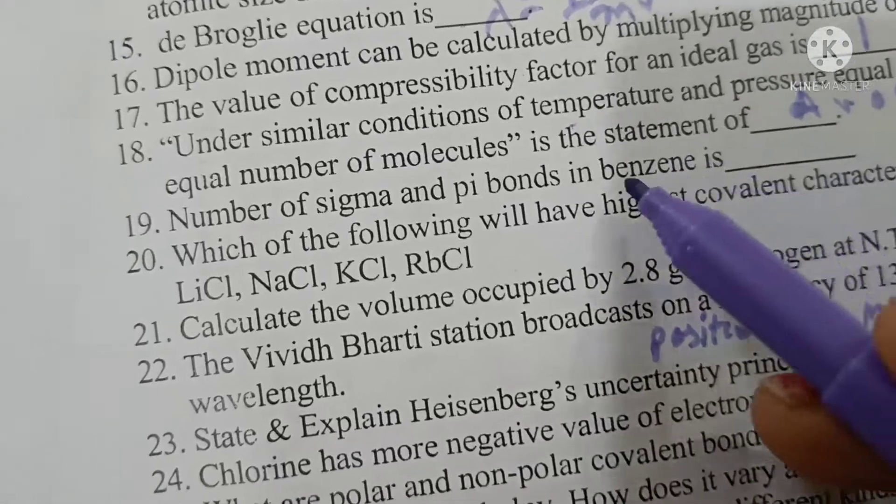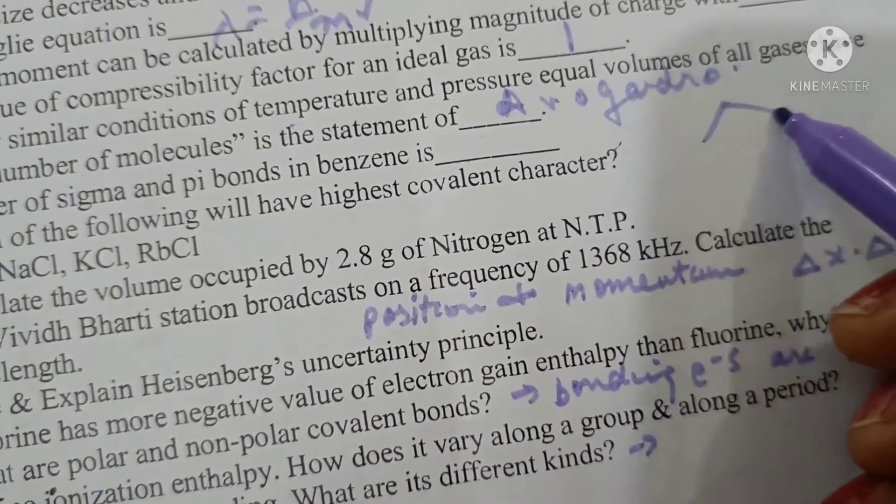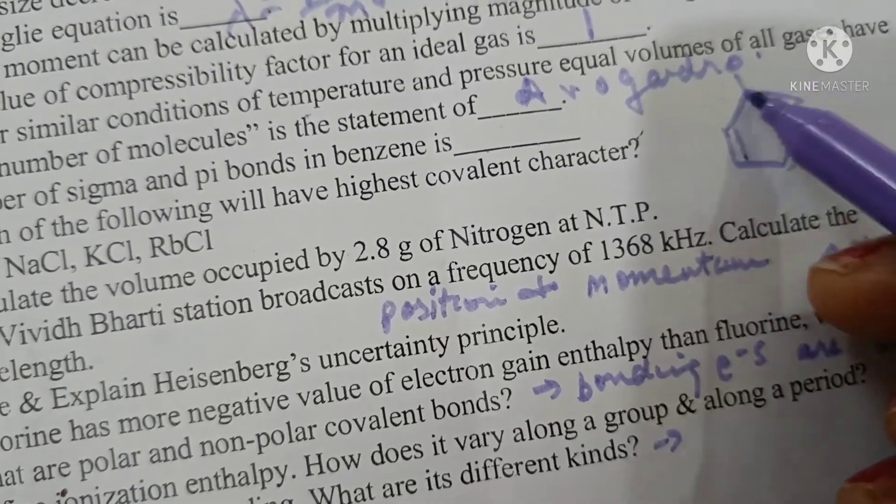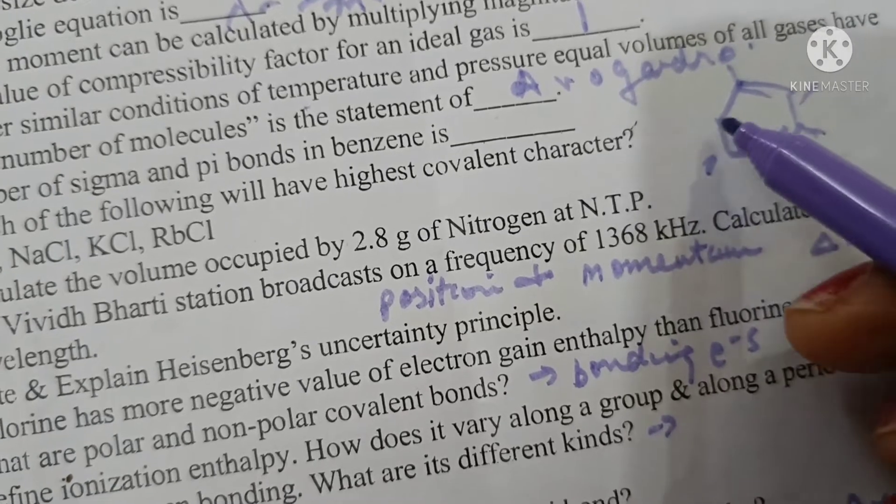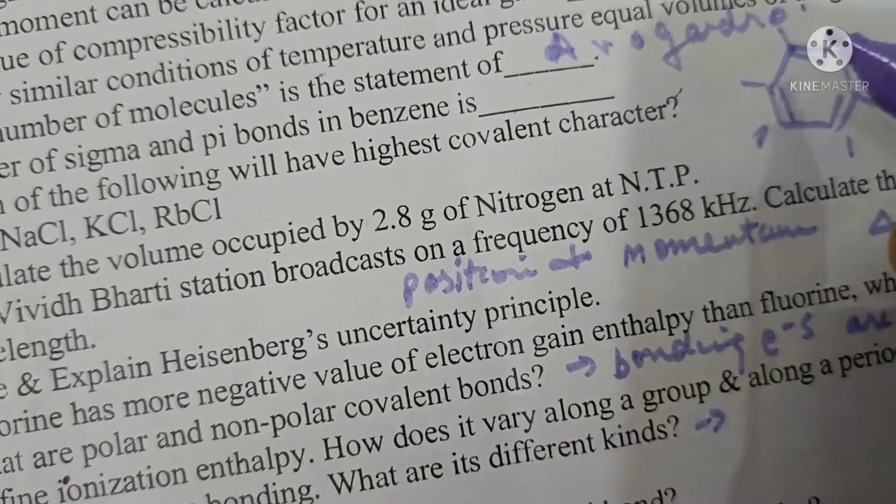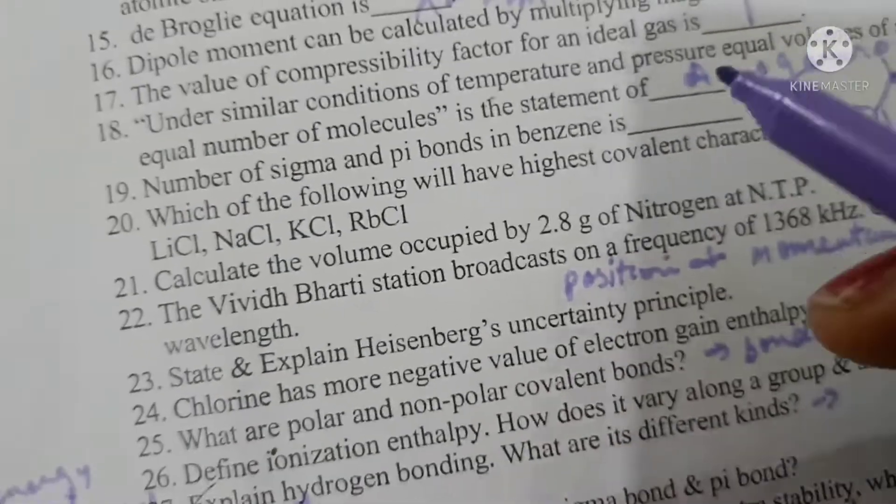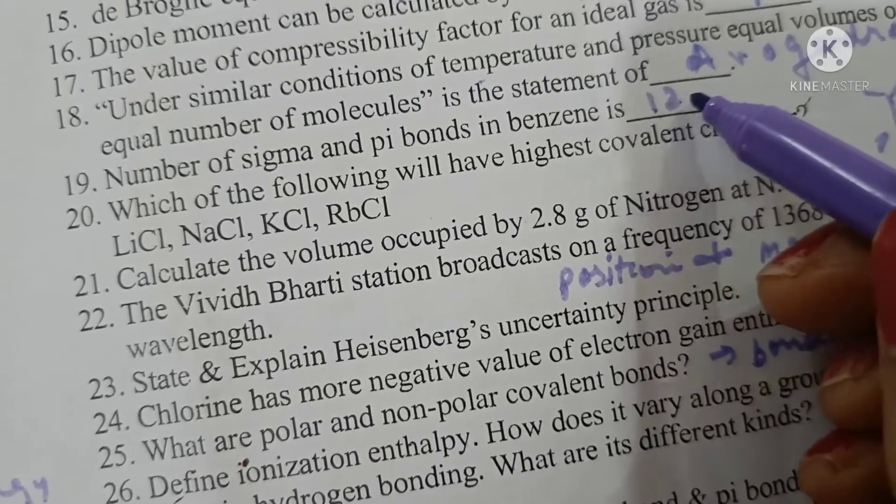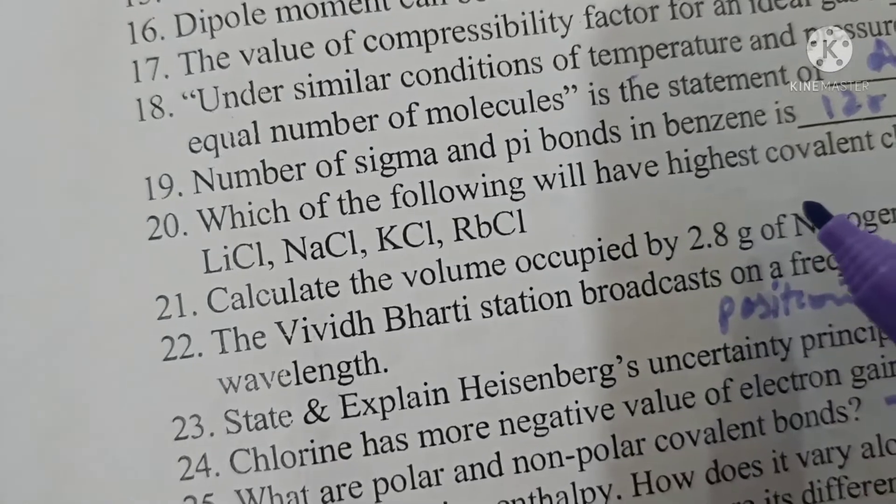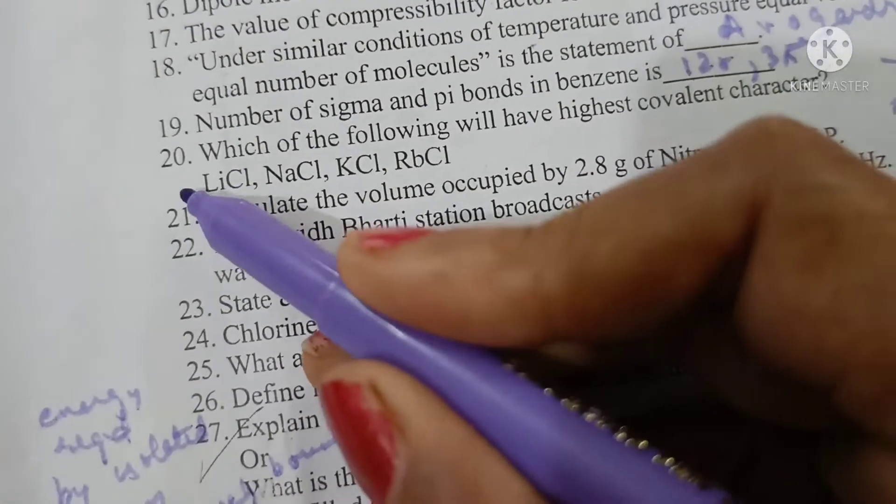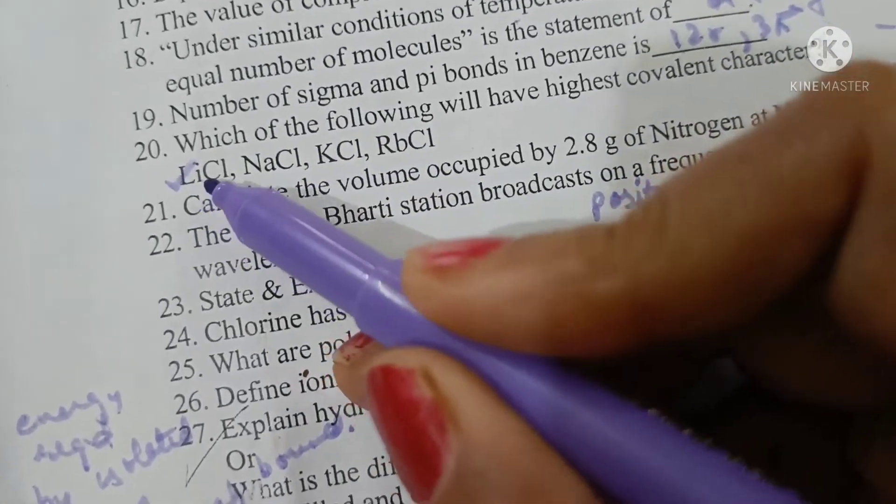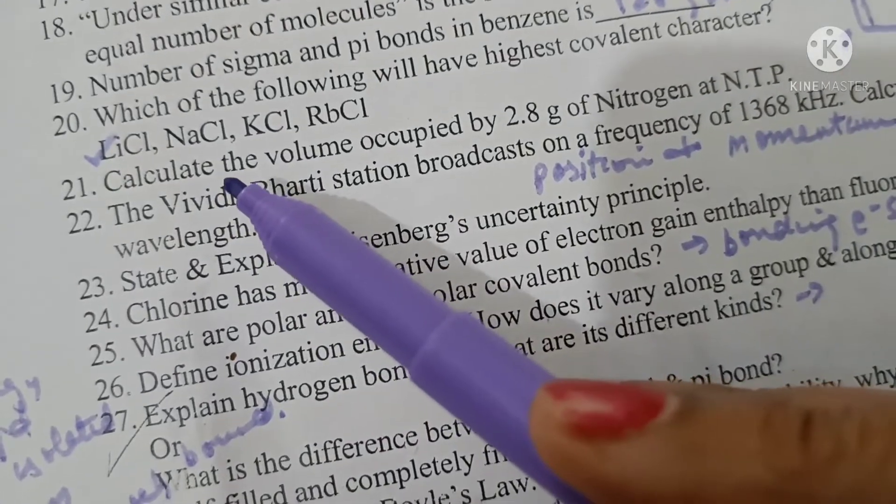The number of sigma and pi bonds in benzene - benzene has 3 pi bonds and as it has 6 carbon hydrogen bonds and 6 carbon-carbon single bonds, it has in all 12 sigma bonds. So 12 sigma bonds and 3 pi bonds. Which of the following will have highest covalent character? As smallest ion is lithium, lithium chloride will have the highest covalent character because it can polarize the chloride ion to a greater extent.